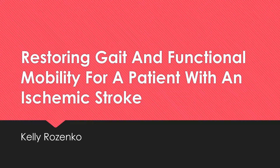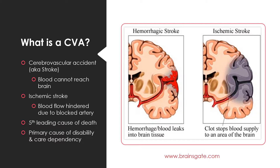The topic I chose to talk about was restoring gait and mobility for a patient with an ischemic stroke. I know we have discussed CVA in class plenty of times, but I just want to hit a few things before I begin. We know that a cerebrovascular accident, or a CVA, is also known as a stroke and occurs when blood is unable to flow to the brain. An ischemic stroke arises when blood flow is hindered due to a blocked artery, whereas a ruptured blood vessel results in a hemorrhagic stroke.